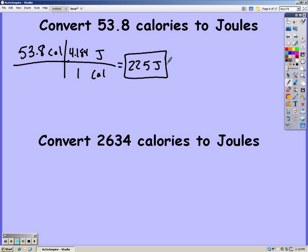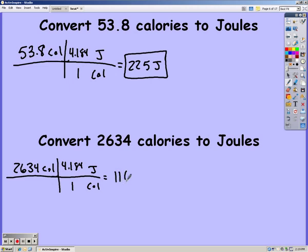So we're going to try the next one. You should have put 2,634 calories. Plug your conversion in. And if you solved that correctly, you should have got 11,021 joules.